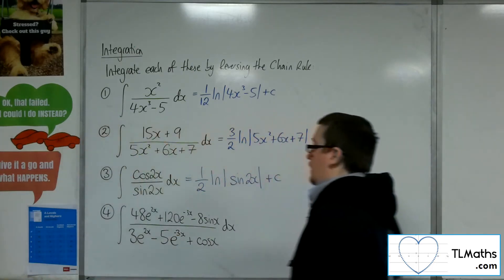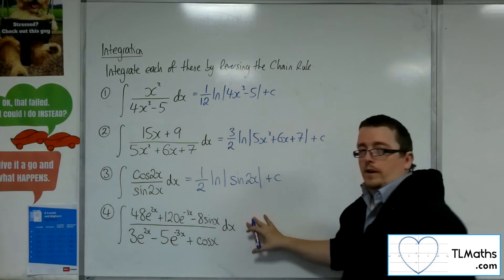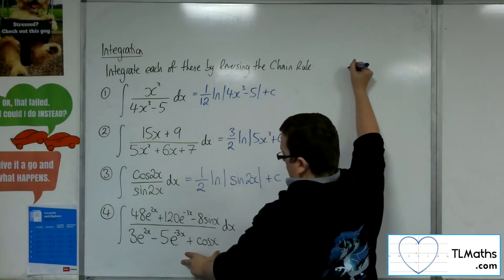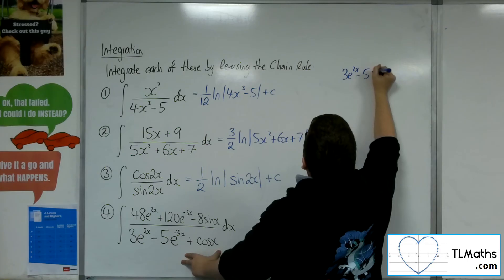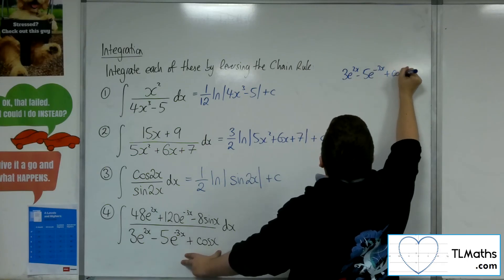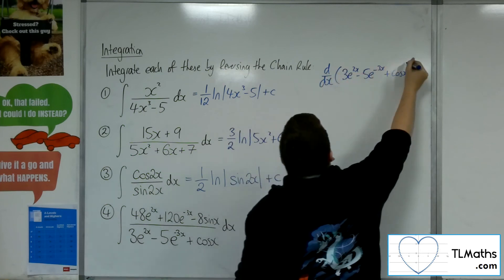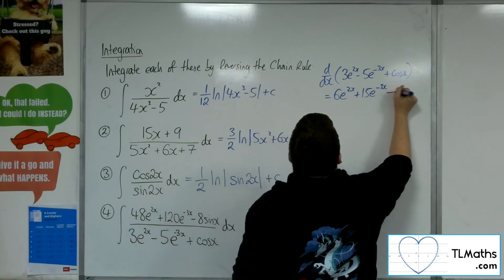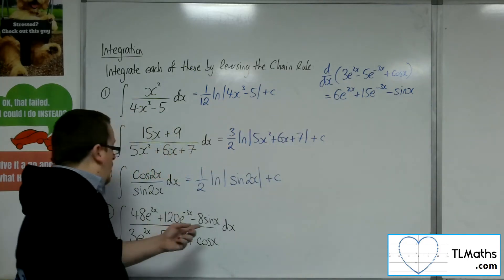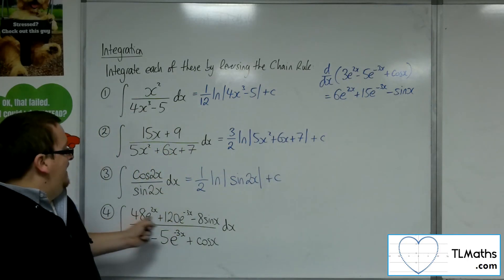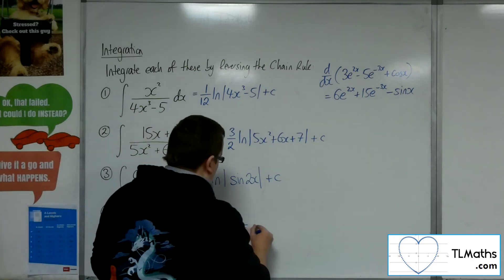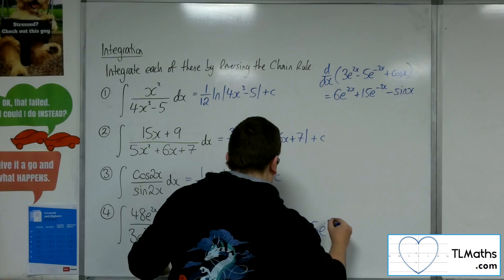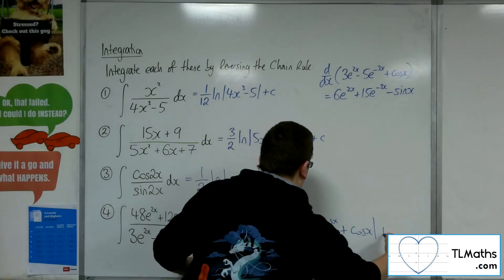Now the last one, number 4. We've got something that looks absolutely horrific, but it's the same concept. Looking at the denominator — 3e to the 2x, take 5e to the minus 3x, plus cosine of x — differentiating that gives 6e to the 2x plus 15e to the minus 3x minus sine x. Comparing that with what I've got in the numerator, I've actually got 8 lots of what I need. And so this is 8 log of 3e to the 2x minus 5e to the minus 3x plus cosine of x, plus C.